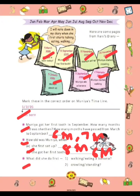Next: what did she do first? In number 1 — walking or eating a banana? She will do eating a banana first. So the answer is eating banana. And next: crawling or standing? She will do crawling first. So the answer is crawling.